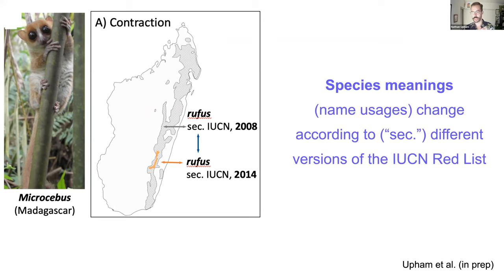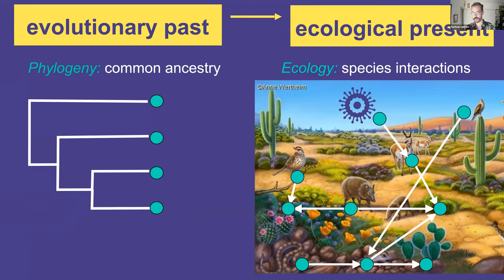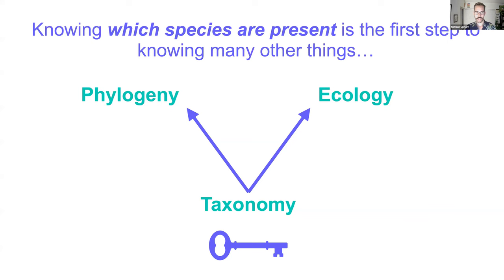Species meanings are changing through time according to different versions of the IUCN Red List or other authorities. Zooming out, species are the tips of trees and phylogenies used to reconstruct evolutionary history, and they're also the important observational point for understanding ecological interactions. To investigate evolutionary or ecological questions, we need a taxonomy with which to communicate.